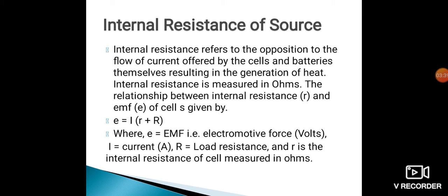Moving ahead to the next topic of unit number 2 — internal resistance of the source. Internal resistance refers to the opposition to the flow of current offered by the cells and batteries themselves, resulting in the generation of heat. That means the source itself offers a resistance to the flow of current, and this opposition results in the form of heat.